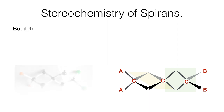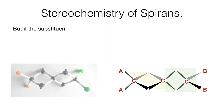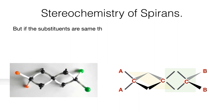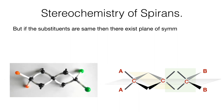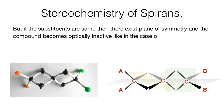But if the substituents are same, then there exists a plane of symmetry and the compound becomes optically inactive, like in the case of cumulins.